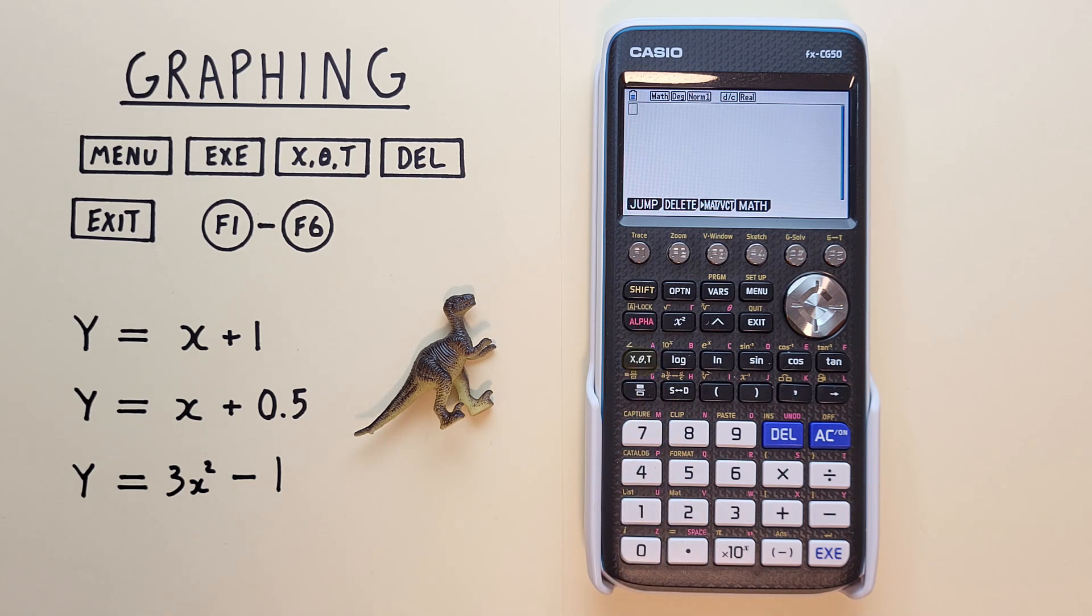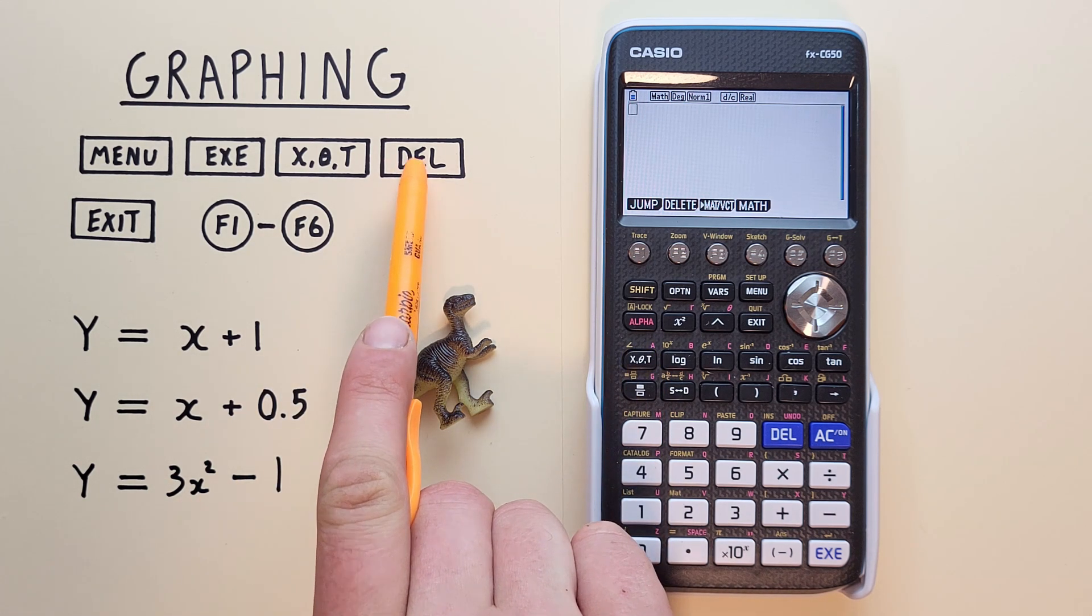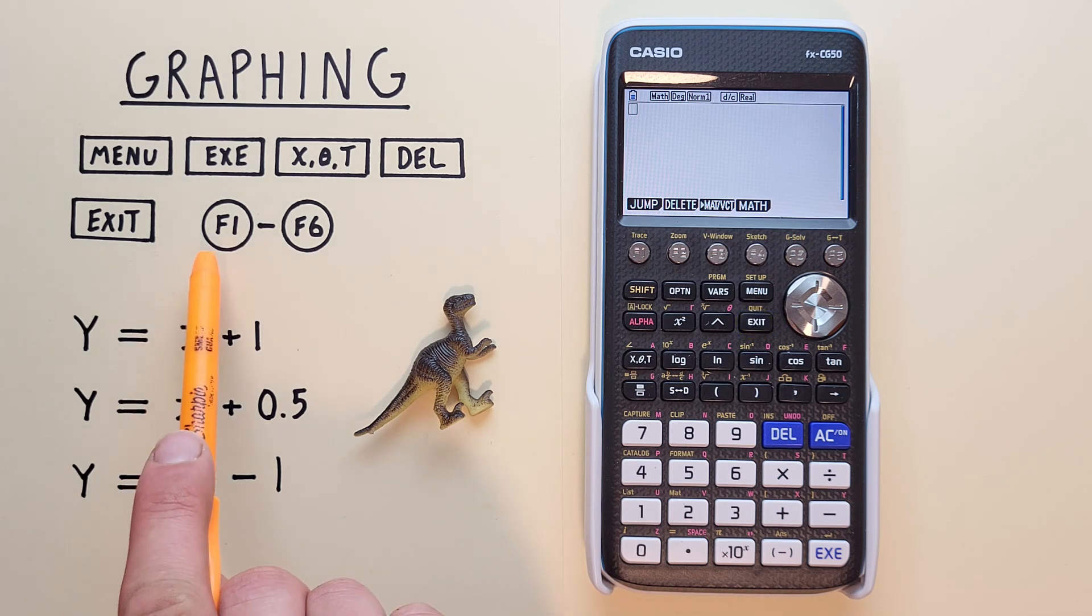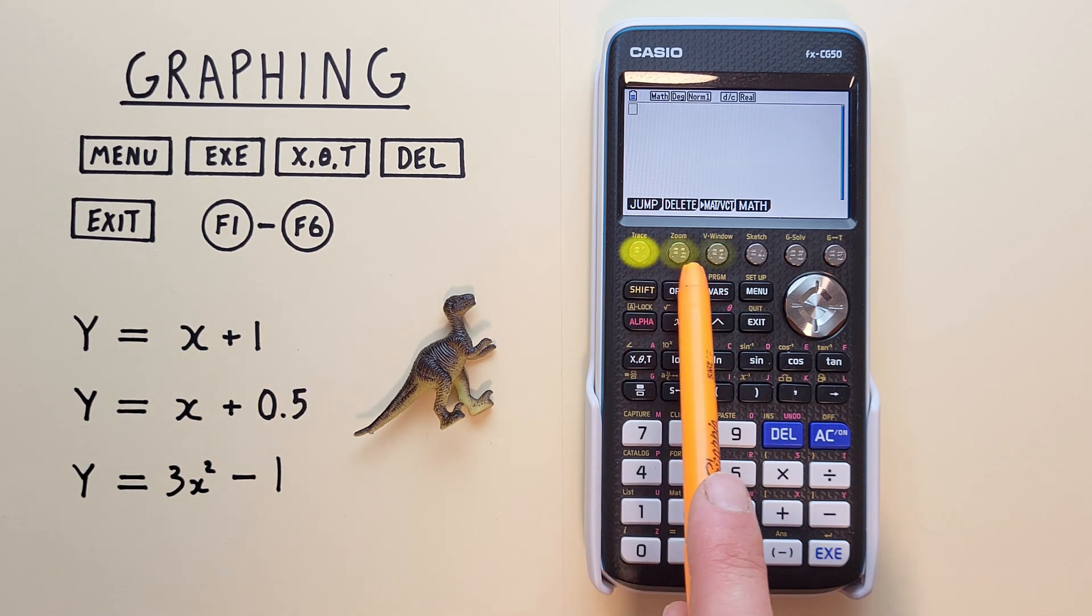The delete key that looks like this, located here. The exit key that looks like this, located here. As well as the F1 through F6 keys that look like this, located across the top here.